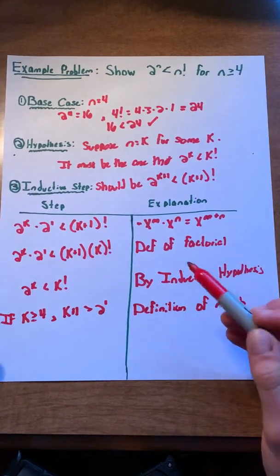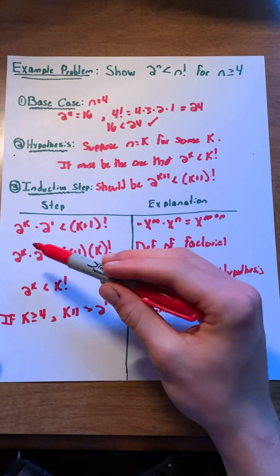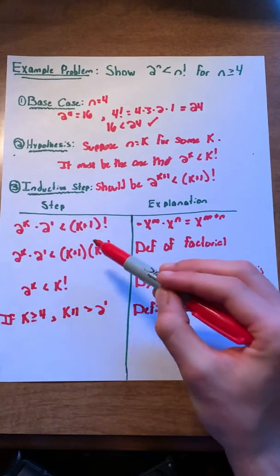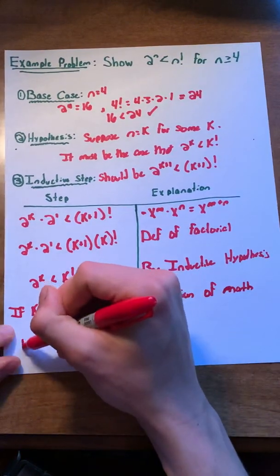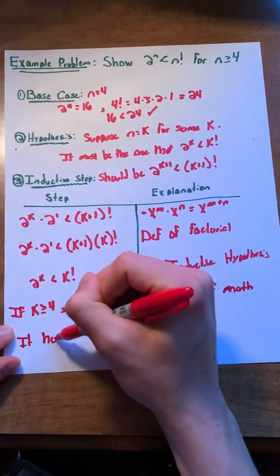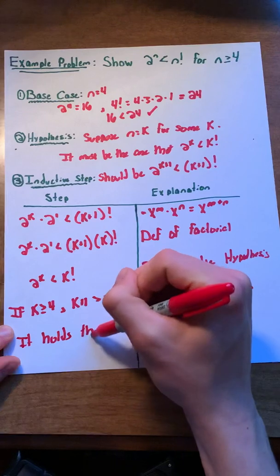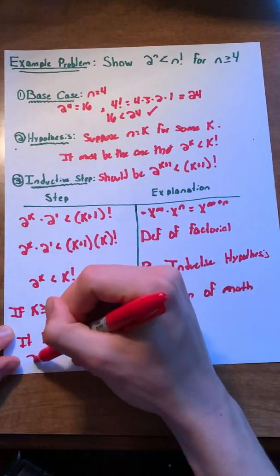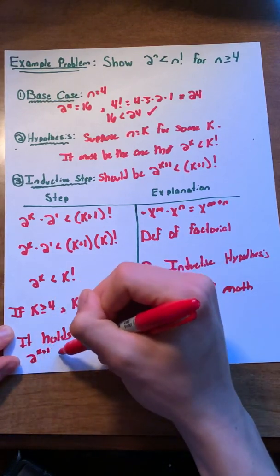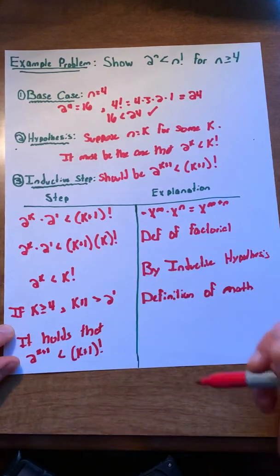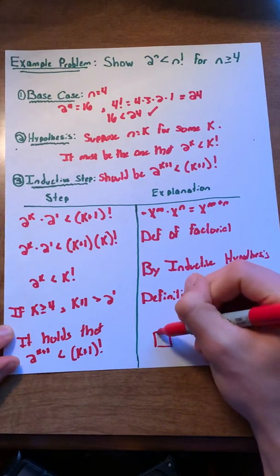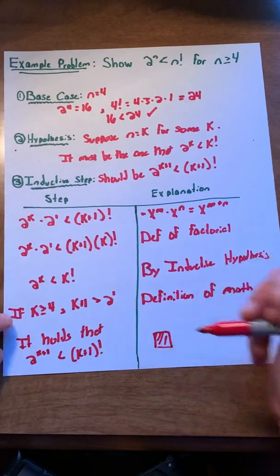So, we've now proven that both parts of this side of the equation are going to be less than the parts of this side of the equation. Thus, it holds that 2 to the k plus 1 is less than k plus 1 factorial. And we can write a little box to say we're done with this proof.